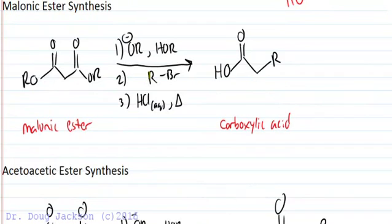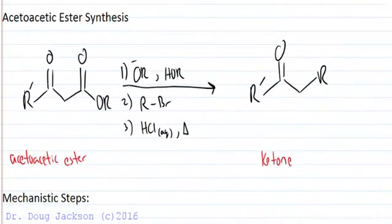We can deprotonate forming the enolate using a base, and then we can alkylate or acylate through an SN2 type reaction from the enolate, and then we can finally hydrolyze the esters back to carboxylic acid. So we get a derivatized carboxylic acid.